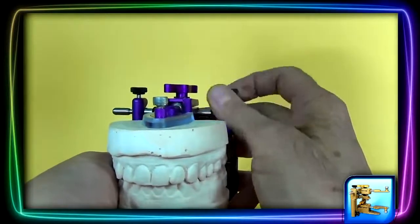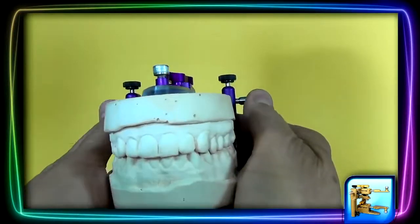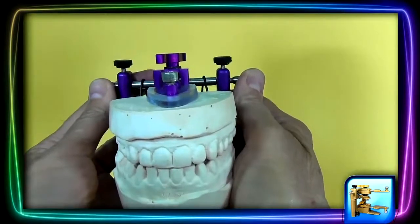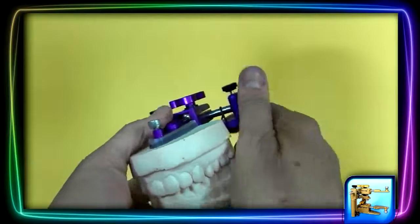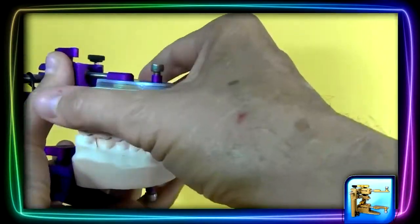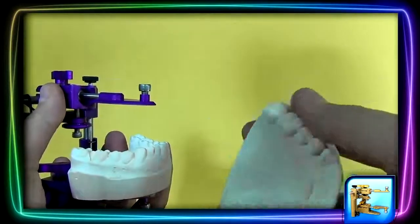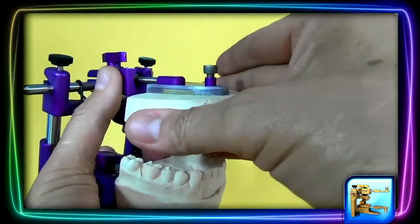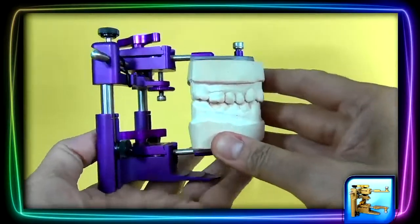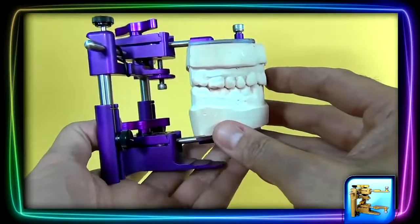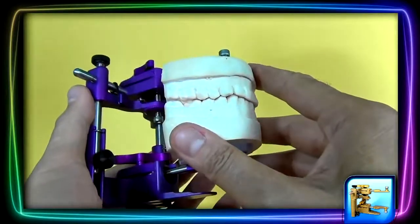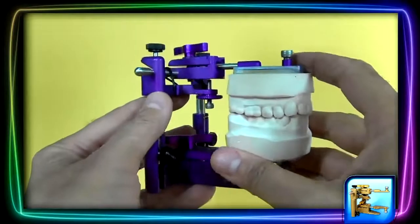As you can see, it's very fast. Here, you have your lateral excursions. Again, at the same time, you can always work off the articulator and then reinsert it 100% securely. This is also great for triple trays. If you do make a mistake and the triple tray is off, it is very easy to re-articulate it.